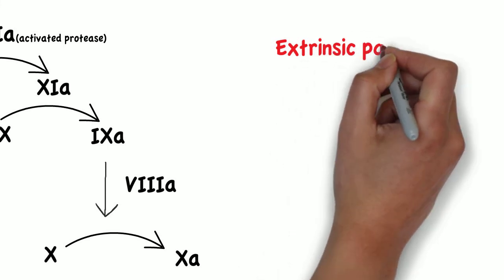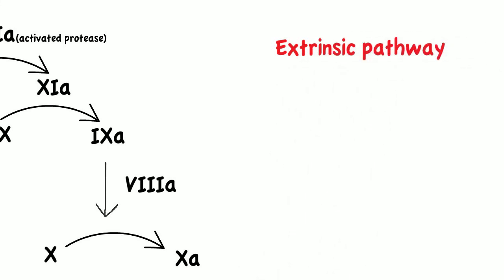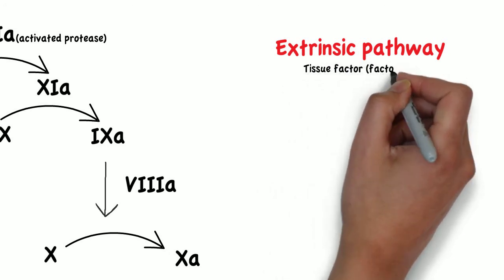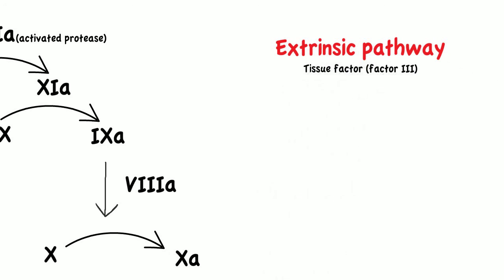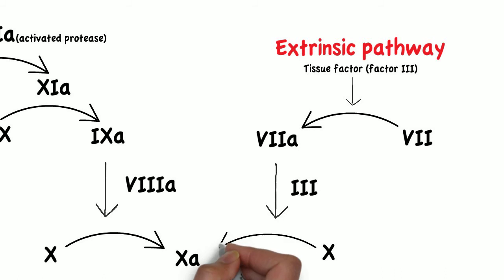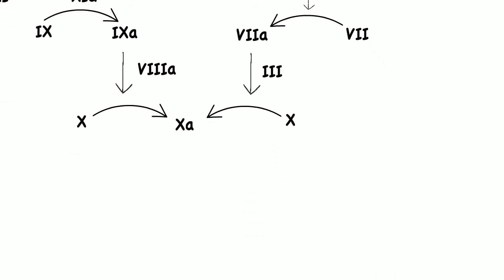The extrinsic pathway is shorter and is initiated upon the release of tissue factor, which is also known as factor 3, released from tissue damage. Tissue factor will activate factor 7 to factor 7a. Factor 7a, in complex with factor 3, activates factor 10 to factor 10a, at which point the common pathway starts.